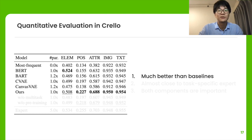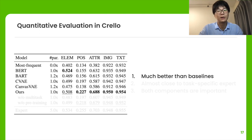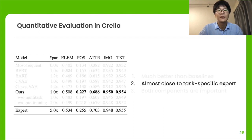We show some quantitative evaluation results. Due to limited time, we only refer to the results on the Crello dataset. First, our best model performs much better than all the baselines. Second, our model is almost competitive to task-specific experts, while it is more parameter-efficient.